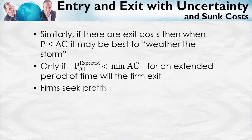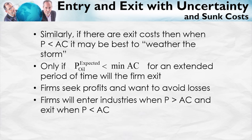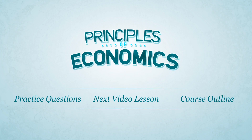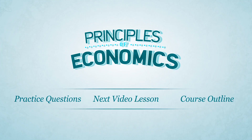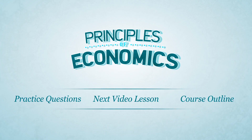However, the bottom line is pretty simple. Firms seek profits and they want to avoid losses. As a result, firms will enter industries when the price is above the average cost and they can make a profit, and they will exit when the price is below the average cost. Thanks. If you want to test yourself, click practice questions. Or if you're ready to move on, just click next video.